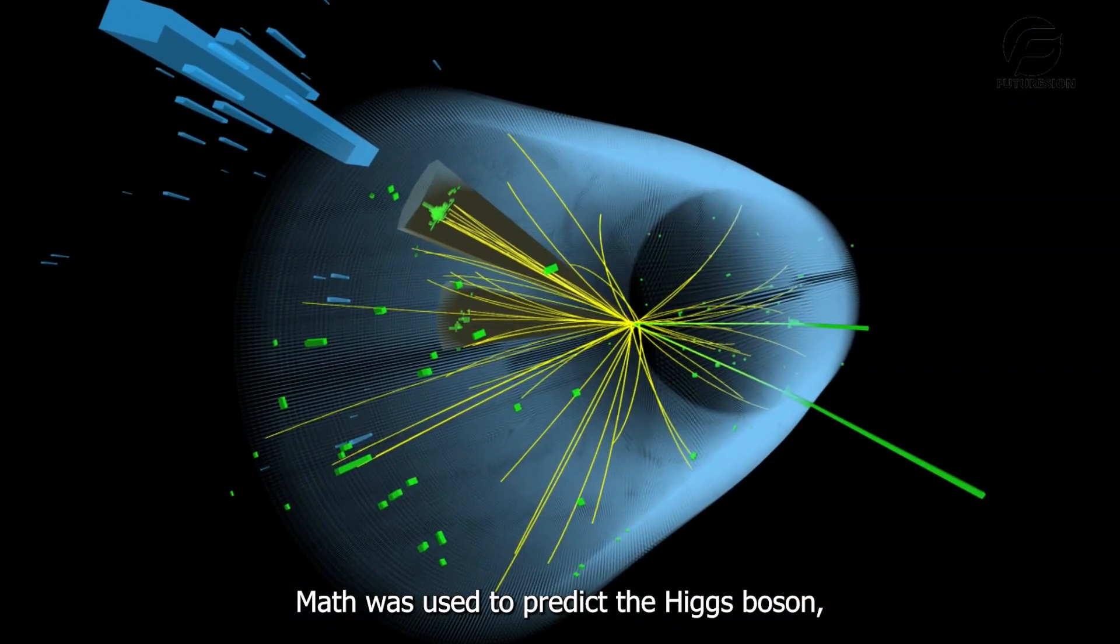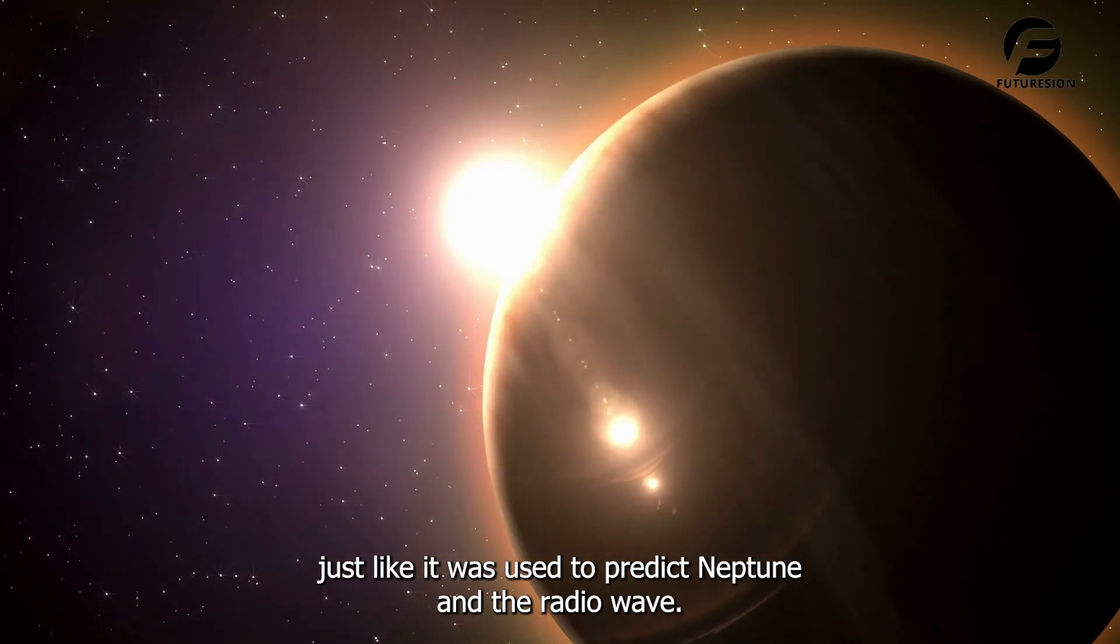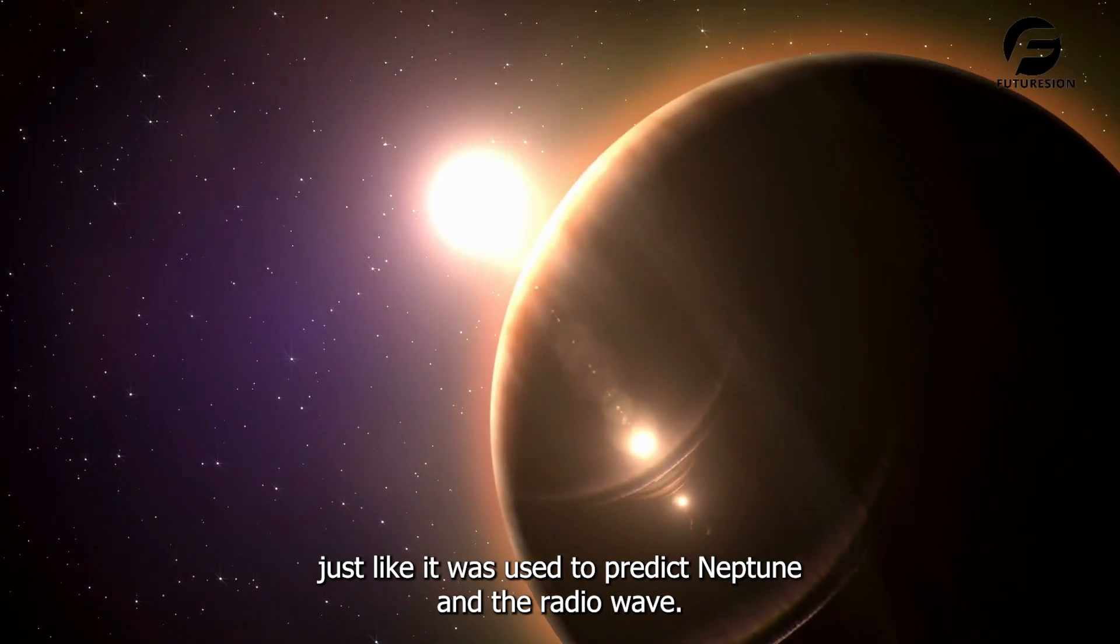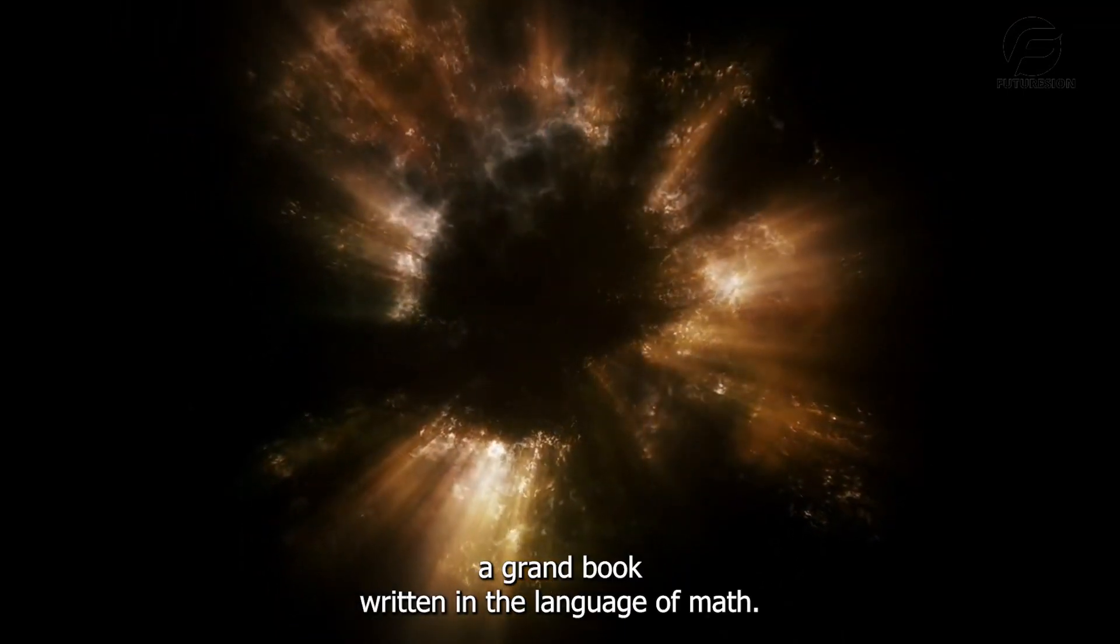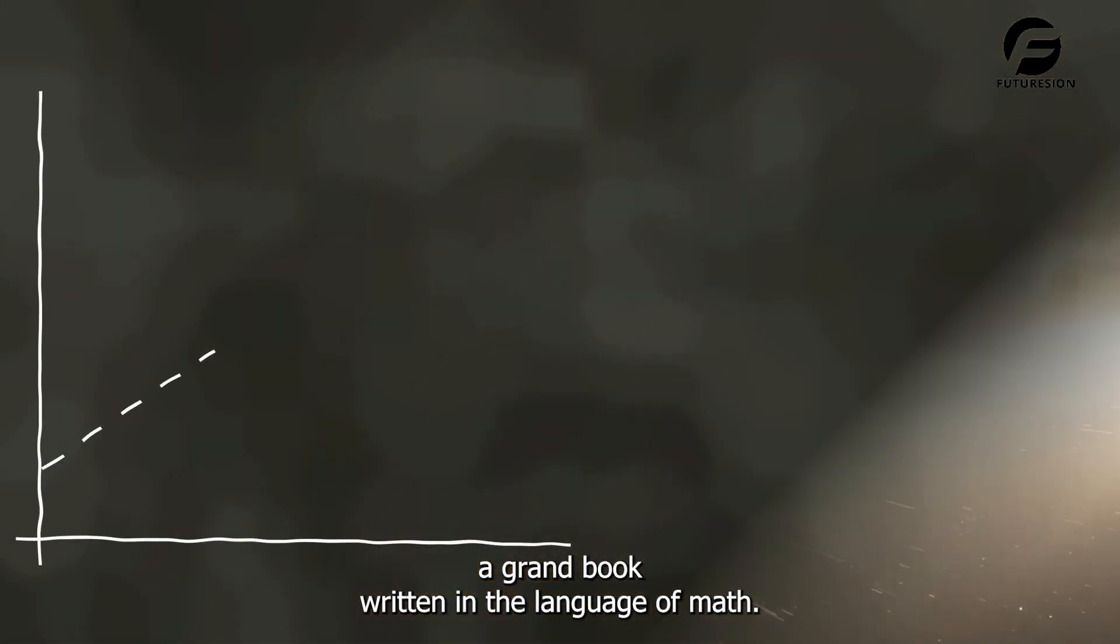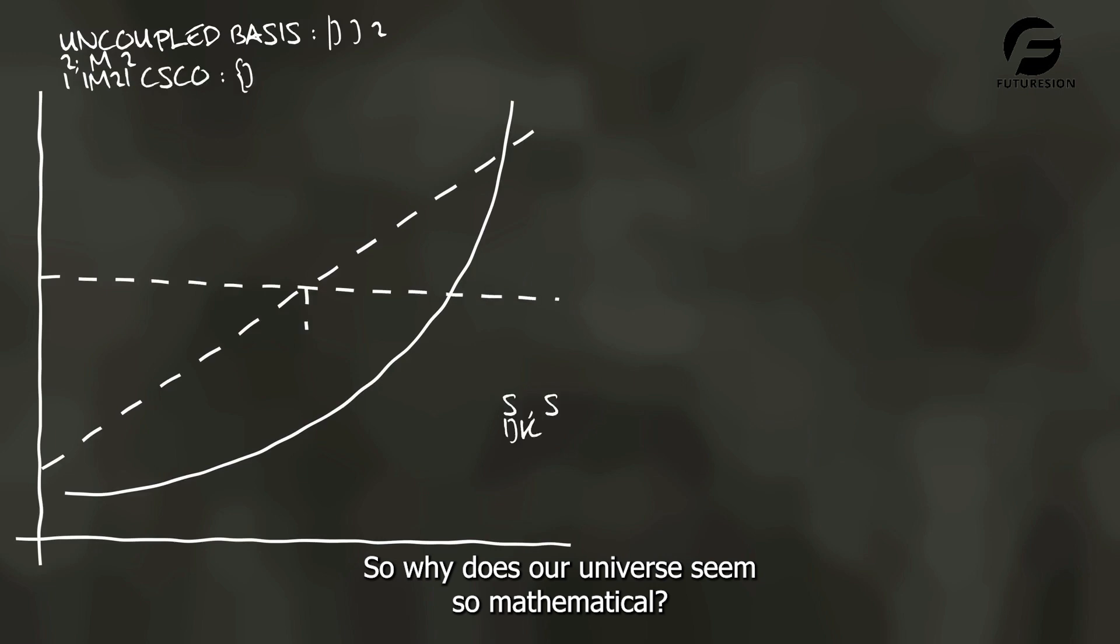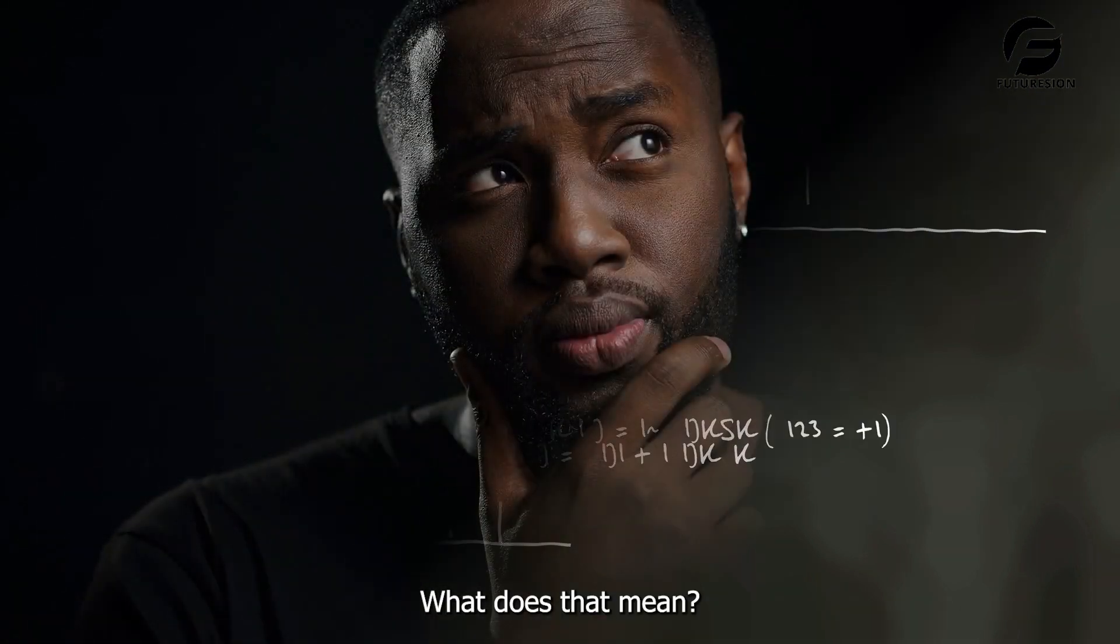Math was used to predict the Higgs boson, just like it was used to predict Neptune and the radio wave. Galileo famously said that the universe is a grand book written in the language of math. So, why does our universe seem so mathematical? What does that mean?